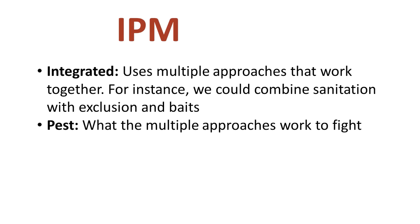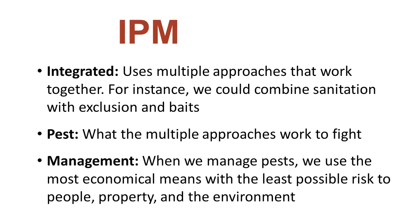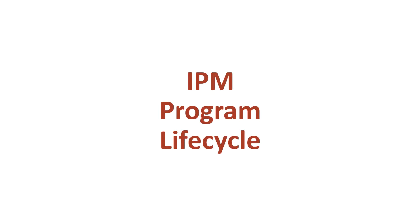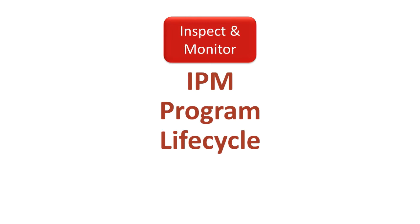When we talk about integrated pest management, or IPM, integrated means using multiple approaches that work together. When we manage pests, we use the most economical means with the least possible risk to people, property, and the environment. IPM is a decision-making process that emphasizes prevention, knowledge of pest biology, and the use of least disruptive control tactics, with pesticides saved as a last resort. At its most effective, IPM is considered a continuing cycle — in a structural setting, an IPM program consists of five steps.